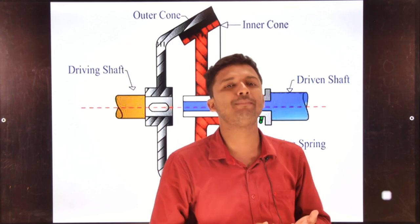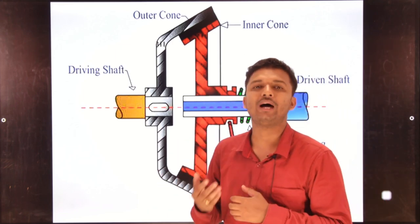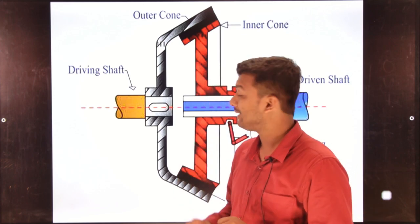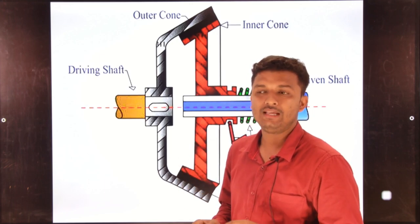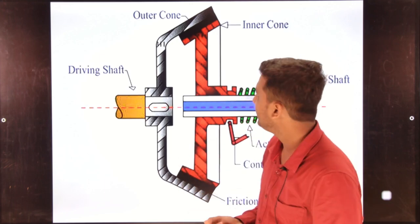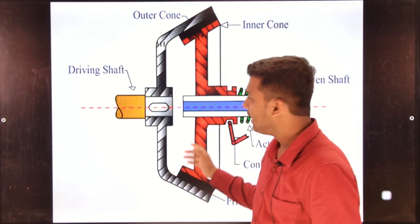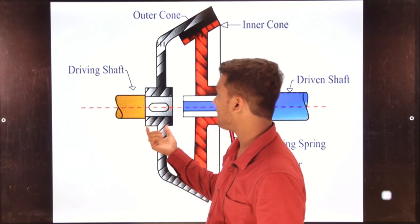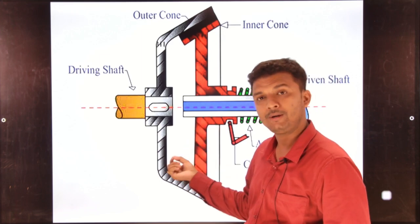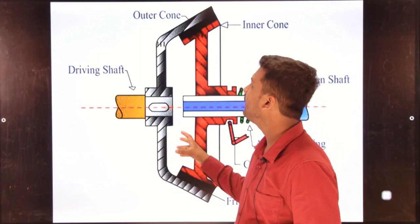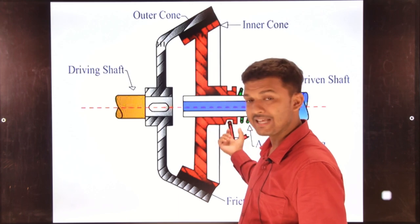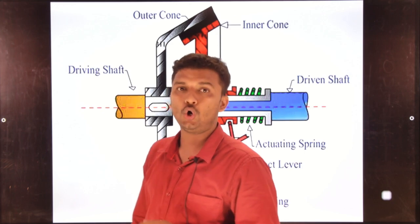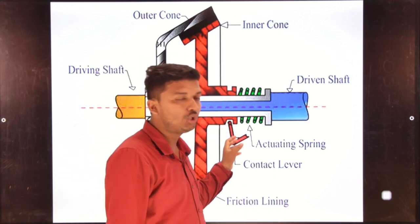In multi plate and single plate clutch there is a pressure plate, and all clutch plates are attached with the pressure plate. The clutch moves with the movement of the pressure plate linkage. But here there is no pressure plate at all. Instead, there is an inner cone system, and the outer cone system is connected to the flywheel. The input shaft is connected directly to the outer cone, and from the outer cone, torque is transmitted to the inner cone via the spline shaft.